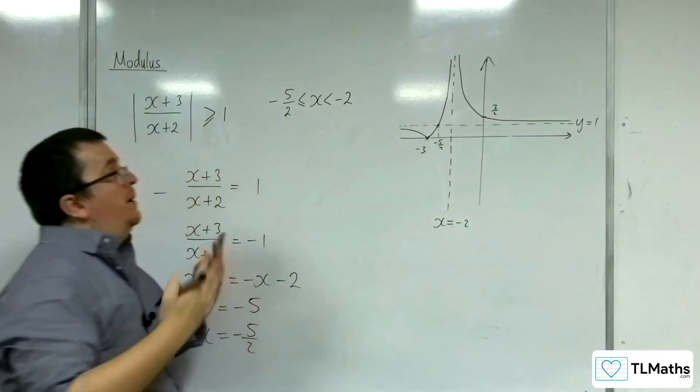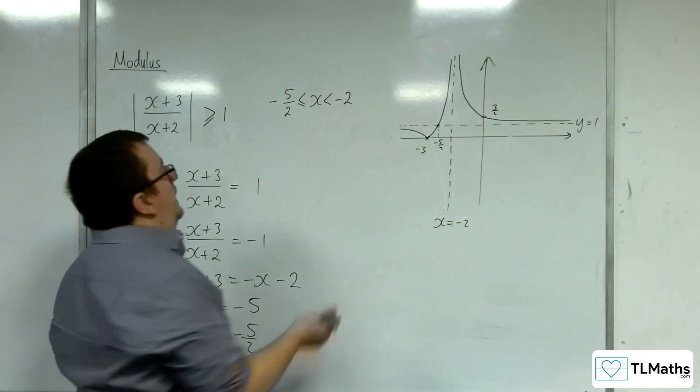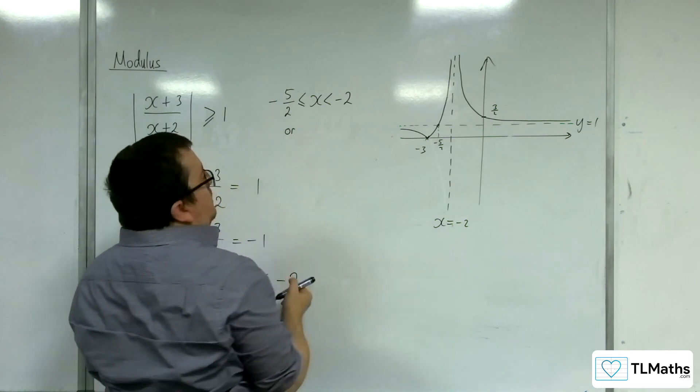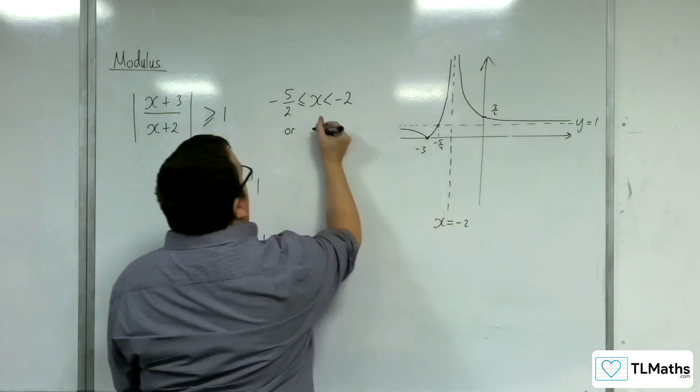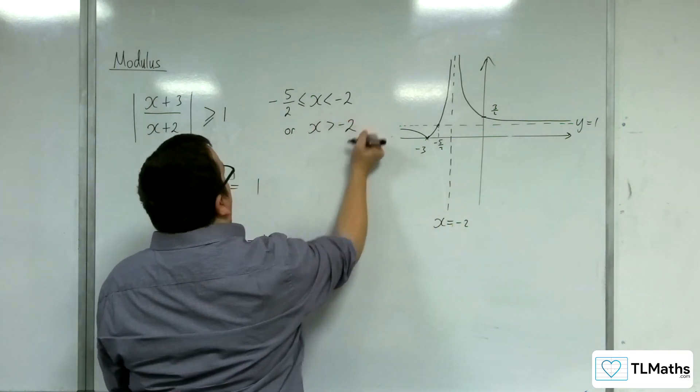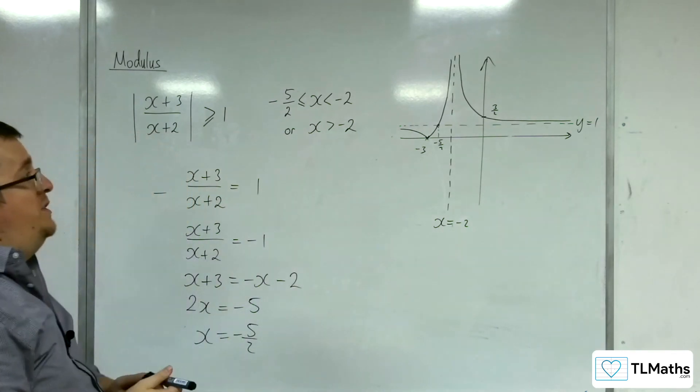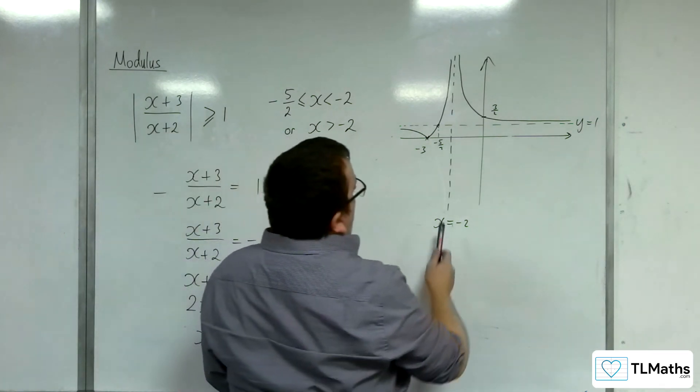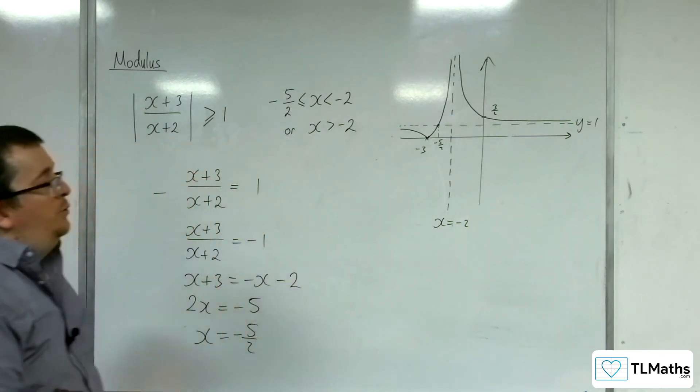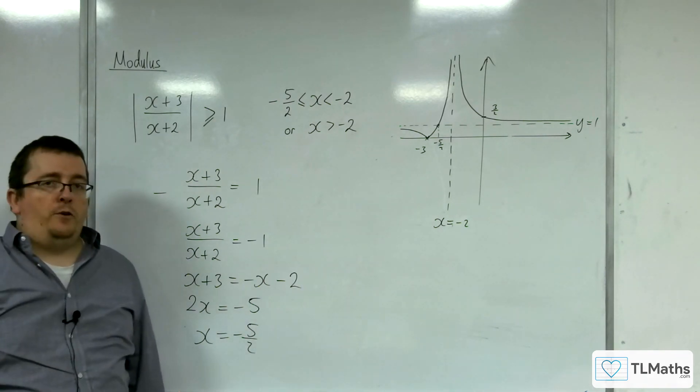That's got to be a strict inequality because we can't have equals to minus 2. So there's that region, or when x is greater than minus 2. So there are two distinct regions because we must exclude x equals minus 2.